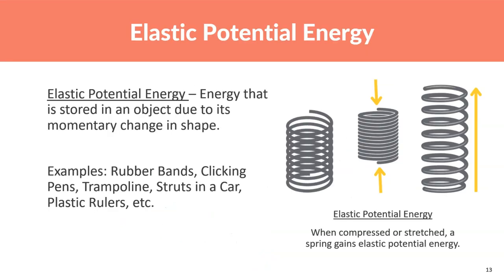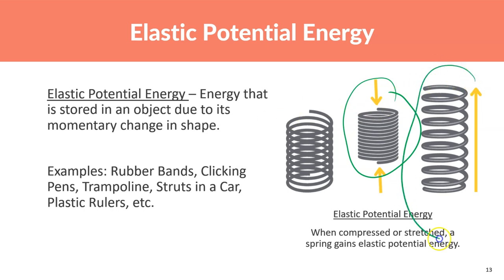The last type is elastic potential energy — energy stored in an object due to its momentary change in shape. Examples include rubber bands, clicking pens, trampolines, car springs/struts, and plastic rulers. When something is compressed or stretched, it stores elastic potential energy as it wants to return to its original shape.